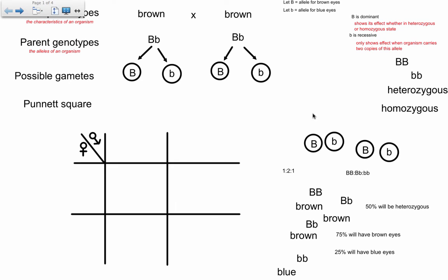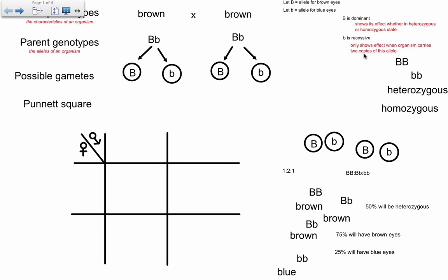Once you have that, the rest is easy. A big letter is dominant — it shows its effect whether in the heterozygous or homozygous state. Little b is recessive; recessive alleles will only show their effect when the organism carries two copies of that allele.